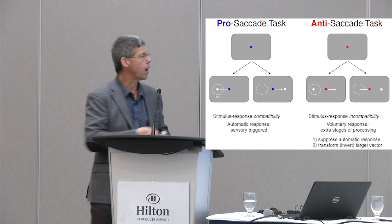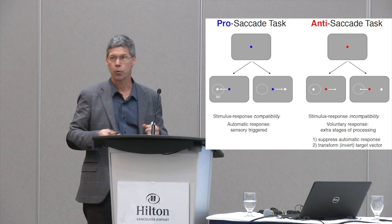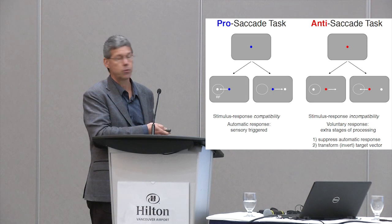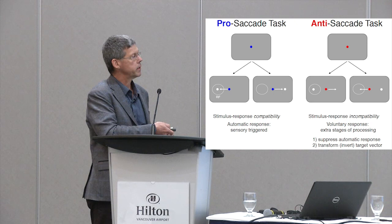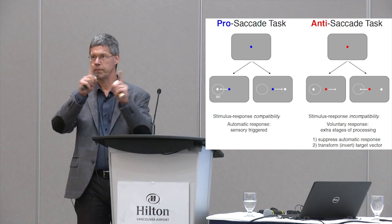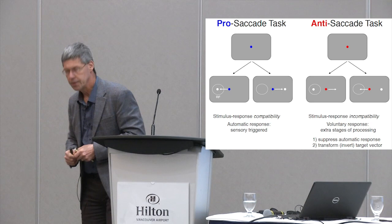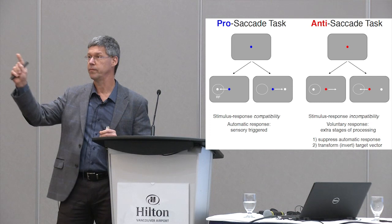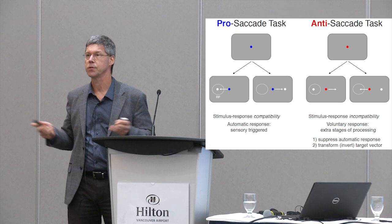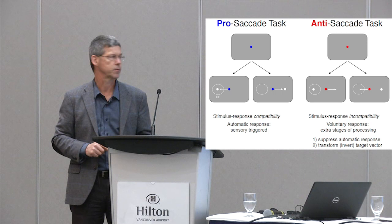We can model this and do experiments simply by asking participants — and young kids will do this — to look at a screen with a central fixation point. At some point, a target will appear either to the left or right, off in the periphery of their vision. Think of it as sitting idly looking out the window and a bird flies by — that's a new visual stimulus in your environment, and your eyes are automatically drawn to it. We ask participants to make a saccade towards this new visual target. This response is automatic, driven by the sensory information that appears.